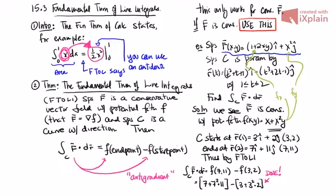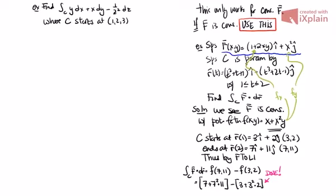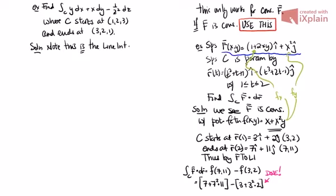Let me do another quick example. Find the integral over C of y dx + x dy − (1/z²) dz, where C starts at (1, 2, 3) and ends at (3, 2, 1). I'm using the dx, dy, dz notation here. It's important to notice that this is the line integral of a vector field.